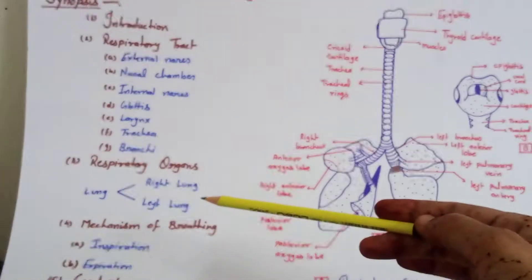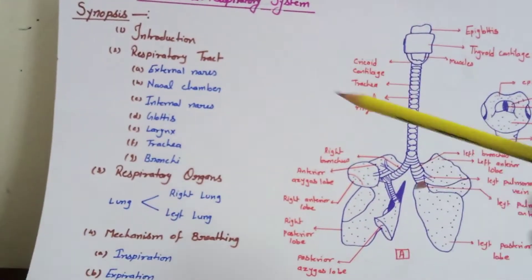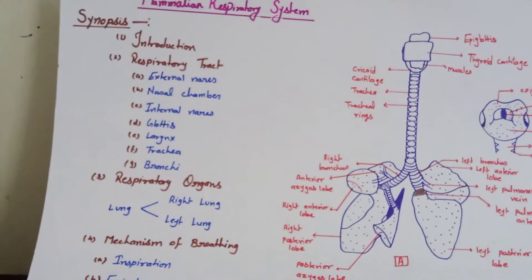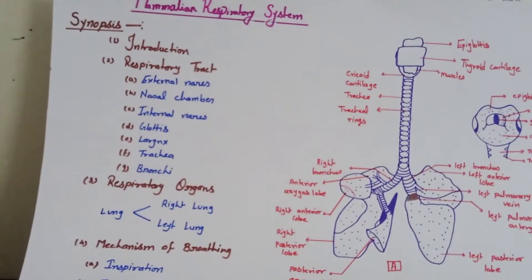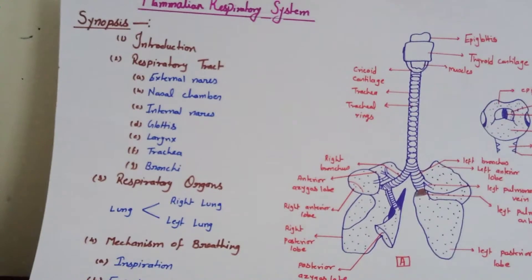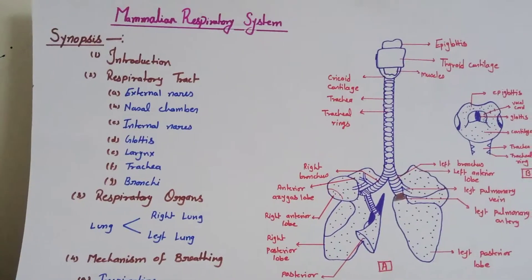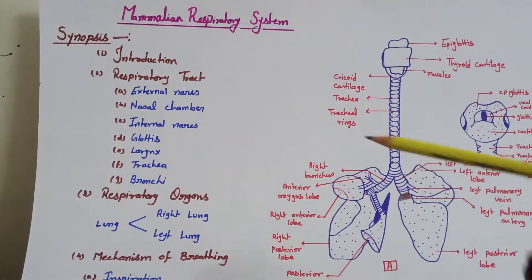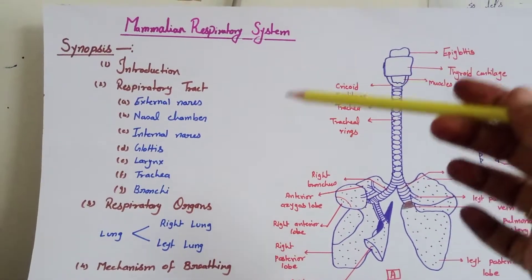Then the mechanism of breathing, that is inspiration and expiration, and then conclusion. First I will explain what the respiratory system is — it is just a network of organs and tissues that help you breathe, meaning the exchange of gases.